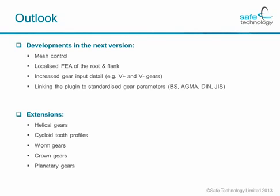So what's in store for the next couple of versions of fast gear fatigue analysis? The very next version should include a much tighter control of the mesh. You should be able to perform localised FEA of the root and the flank, and there should be an immense increase in gear input detail so that you can look at profile shift corrected gears, V-plus and V-minus gears. We also aim to link the plug-in to standardised libraries of gear parameters as supplied by, for example, AGMA or DIN.